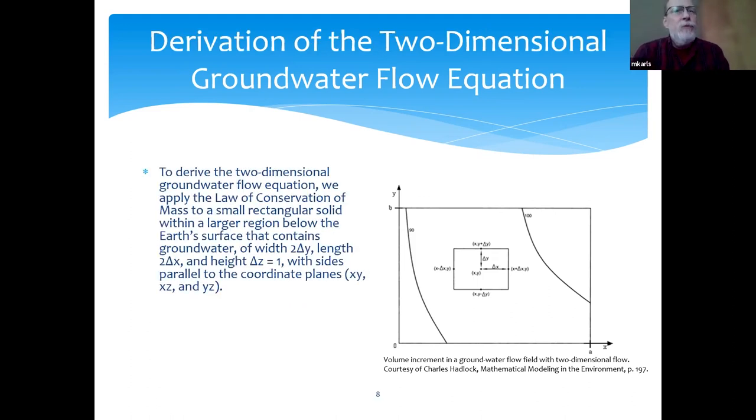So to derive this two-dimensional groundwater flow equation, we're going to apply the law of conservation of mass to a small rectangular cell within a larger region below the earth's surface that contains groundwater. This region has width two delta y, length two delta x, and height delta z equals one, and the sides are parallel to the coordinate planes. Here's a little picture of what we're looking at. The water is going to flow from head level 100 units to head level 9 units, and water flows from high level to low level, so it's going to flow this way.